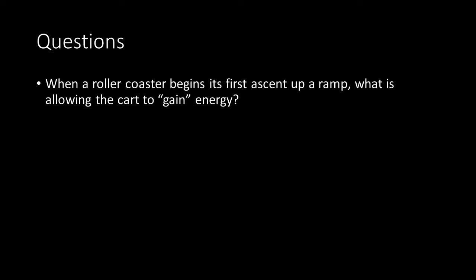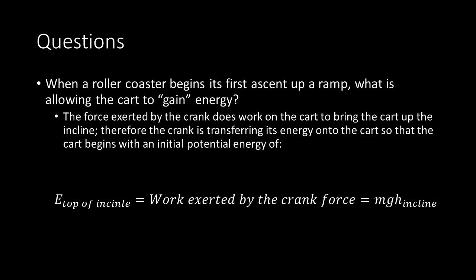When a roller coaster begins its first descent up a ramp, what is allowing the cart to, in quotes, gain energy? The force exerted by the crank does work on the cart to bring it up the incline. Therefore, the crank is transferring its energy onto the cart so that the cart begins with an initial potential energy. The energy at the top of the incline equals the work exerted by the crank force, which equals mgh of the incline.